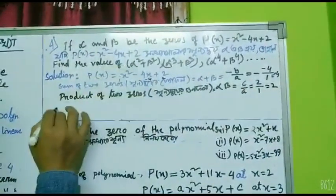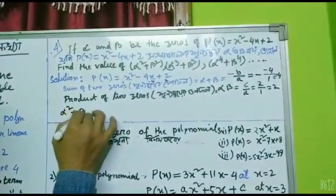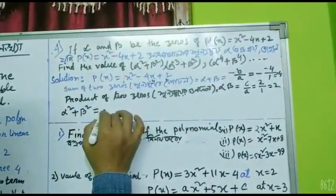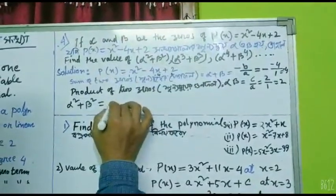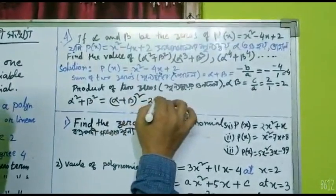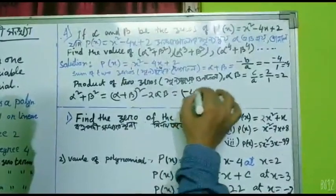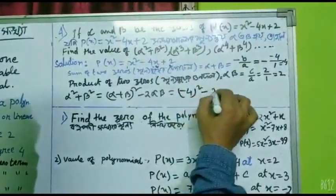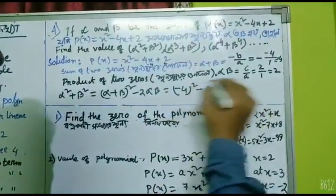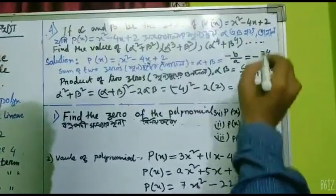Now, alpha² + beta² = (alpha + beta)² - 2(alpha × beta) = (-4)² - 2×2 = 16 - 4 = 12.